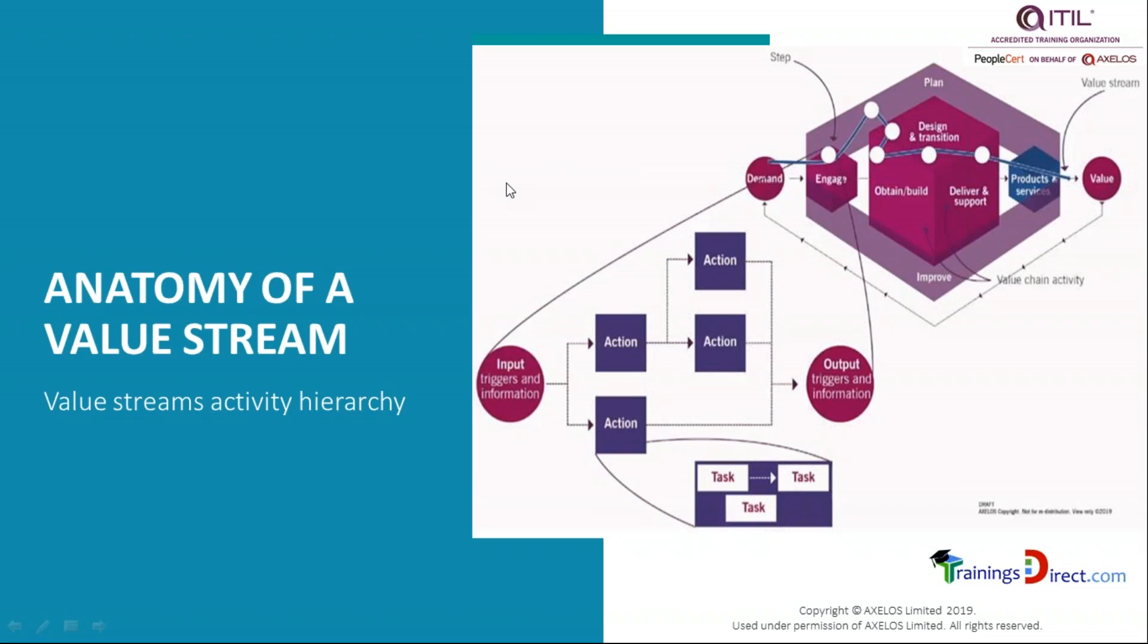One value stream may be connected with another value stream. For example, if I'm a service provider handling an incident but there's some connection to the hardware system - I'm handling a software incident but eventually need hardware support - I may have to work with a hardware supplier. The hardware supplier will have their own value stream which connects with my value stream to resolve the incident.